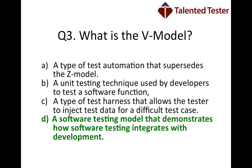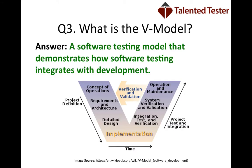The correct answer is D, a software testing model that demonstrates how software testing integrates with development. Looking at this diagram, we can see on the left-hand side we have detailed design from requirements and architecture, and on the right-hand side we have system verification, which is typically system testing and low-level testing, and we can see how they mesh together. The V model is one of the earlier models, which I've used quite extensively in my career. Nowadays a lot of people tend to go with the agile method because it's quick to implement and doesn't require a lot of documentation.